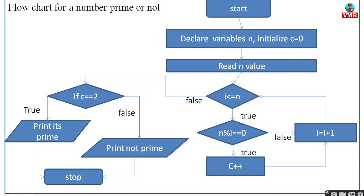In the flowchart, the same Start and Stop symbols are used, along with decision symbols for conditions and parallelograms for printing. You declare variables, initialize values, and read the n value. Let's take n = 4: you should get 'not a prime'. And for n = 3, you can check how the loop progresses. Arrow marks show the connectivity — from which step to which step you are moving depending on conditions.